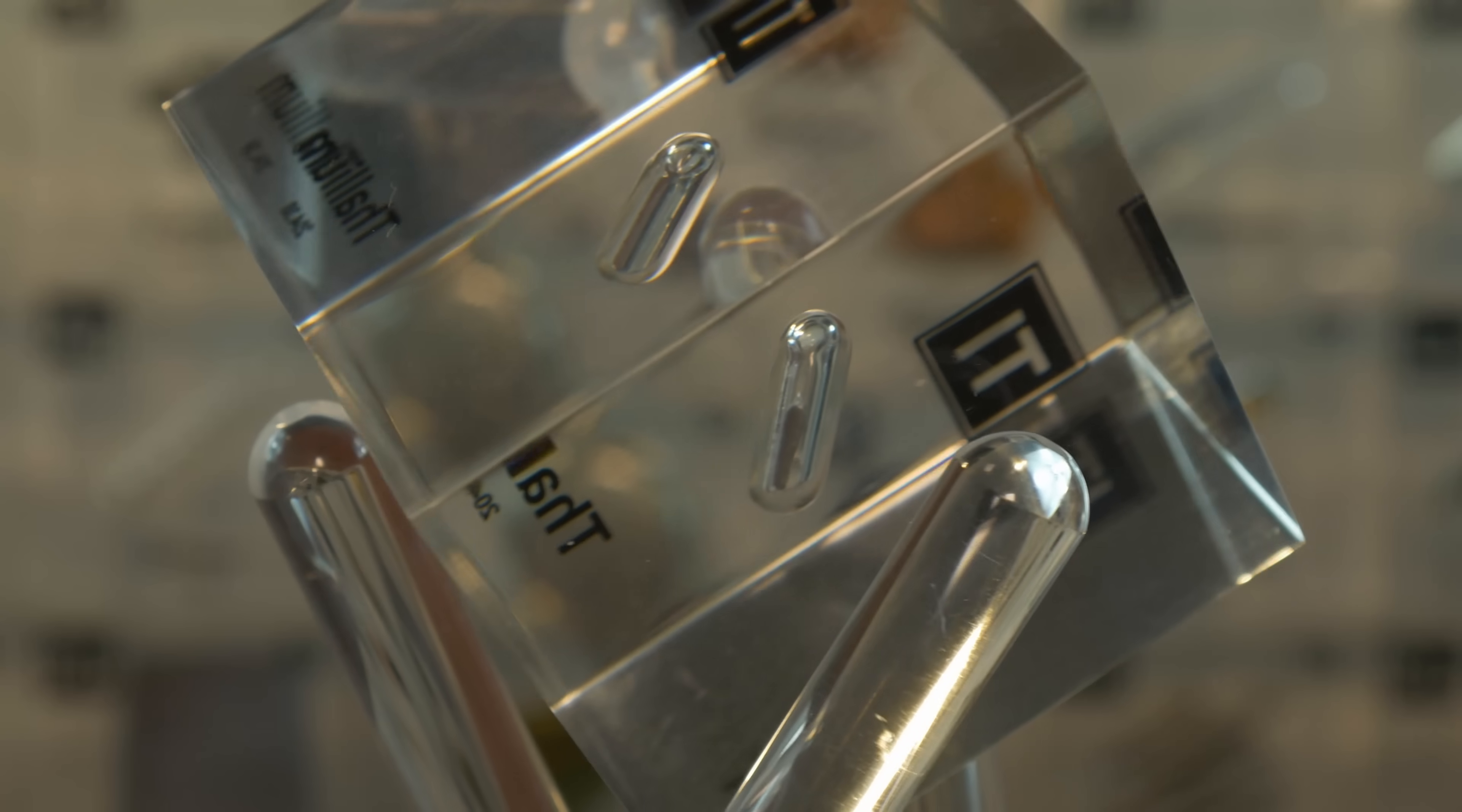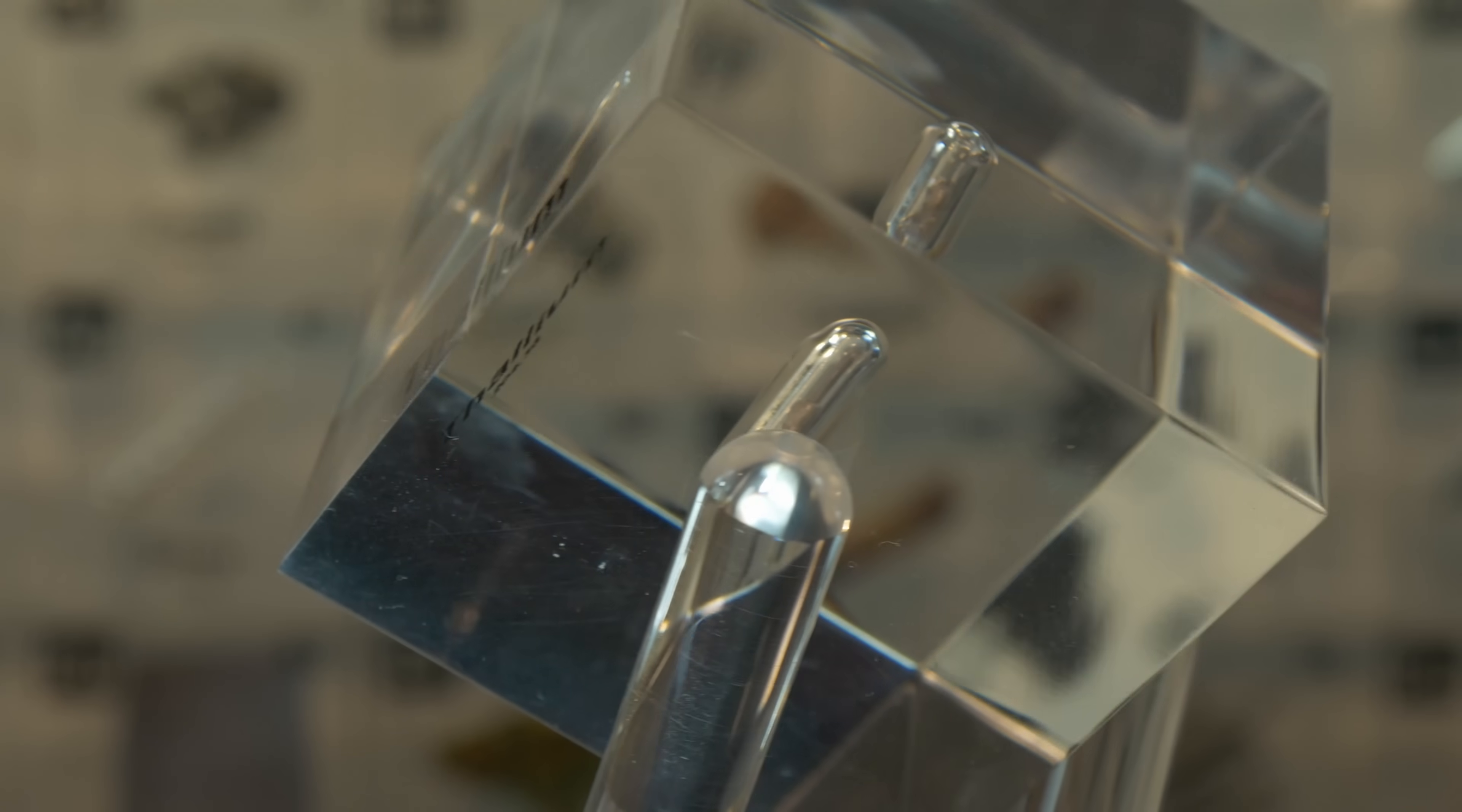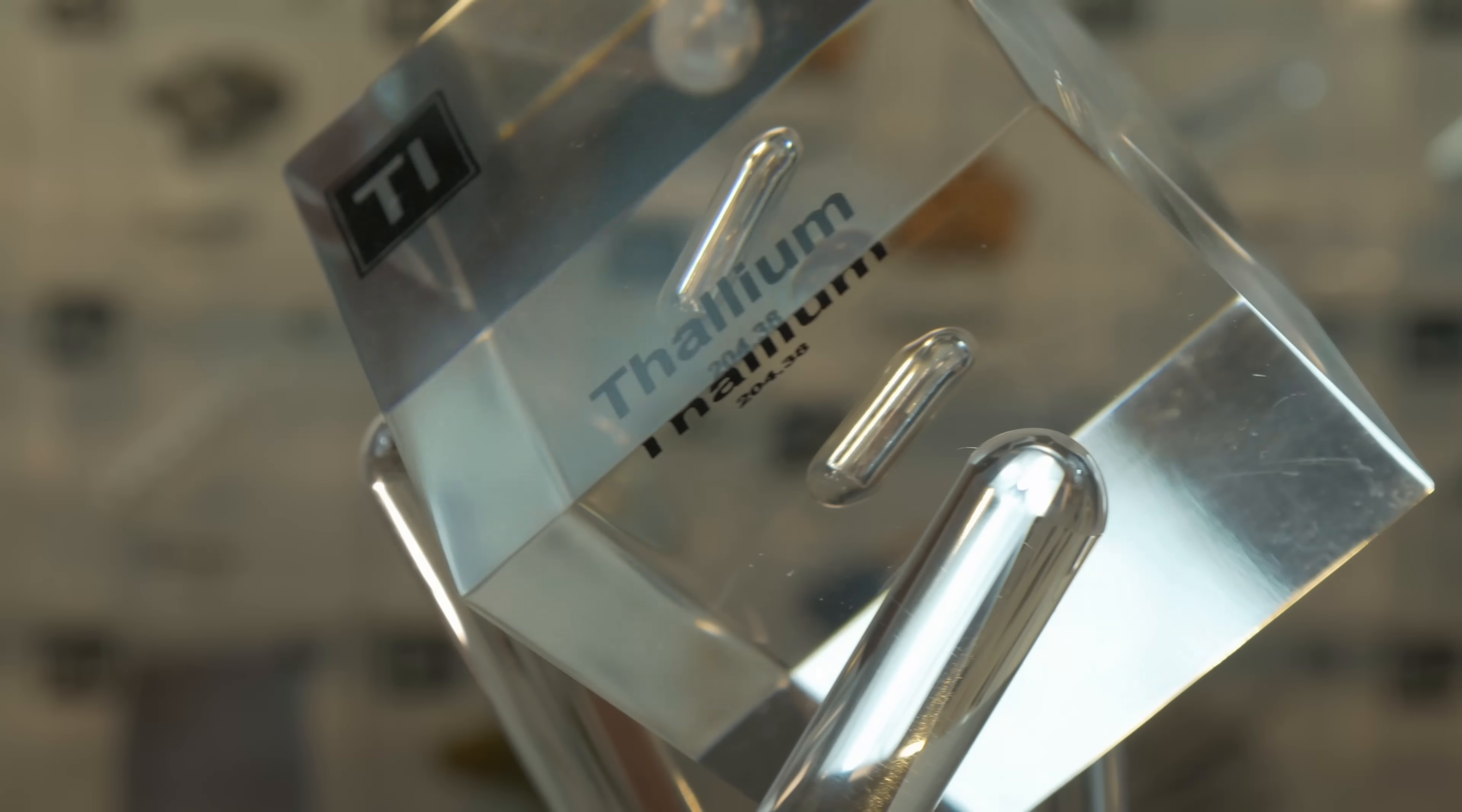Even a tiny dose, this metal packs a punch. A total of just one or two grams of ingested thallium can be fatal to an adult. Now, unlike quick-acting cyanide, thallium works slowly and insidiously, giving a poisoner plenty of time to cover their tracks.